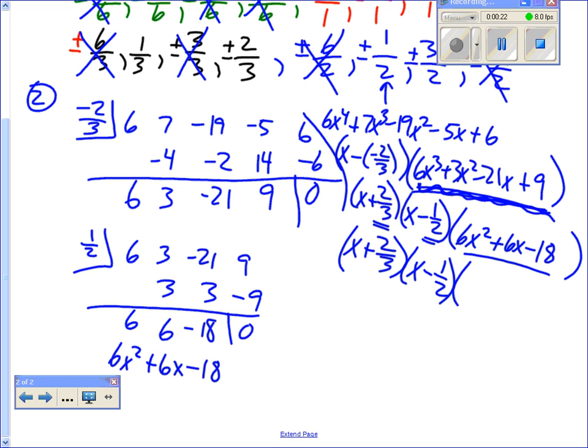And then we saw that one-half was also a factor. So we went x minus a half, and then we took the division of this one, and we divided it out. We divided it by this x minus a half, and we ended up with this right there from our synthetic division, right? So we got that 6x squared plus 6x minus 18.